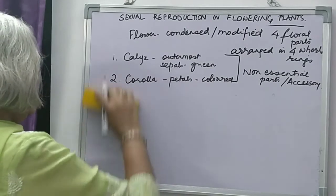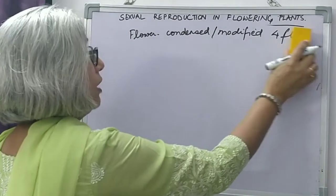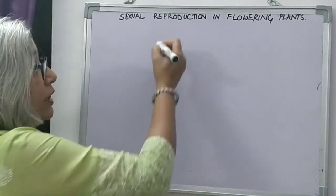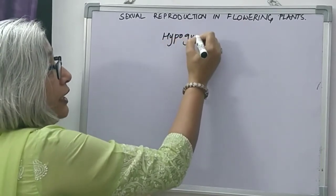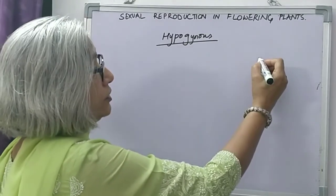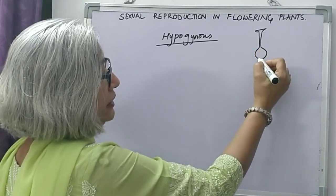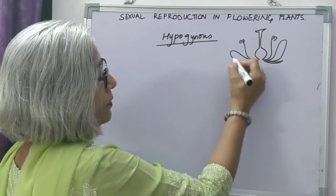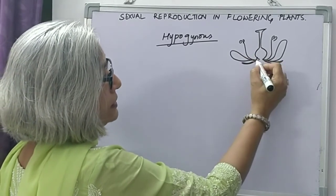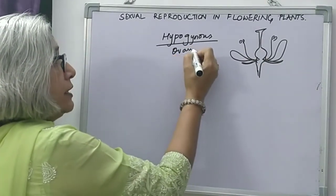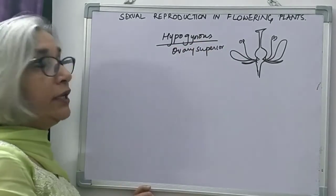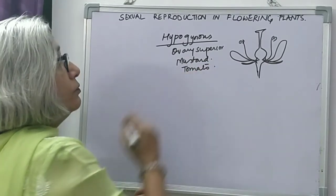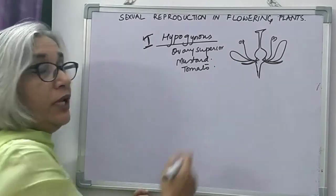A very important thing about the flower is how these parts are placed together, and what is the position of the ovary in relation to the other parts. Based on that, flowers are of three kinds. Hypogynous flowers are such that the ovary is superior — it is placed above all the other parts. The other floral parts — stamen, petal, and calyx — all arise below the ovary. We use the term hypogynous to describe such a flower, like in mustard and tomato.